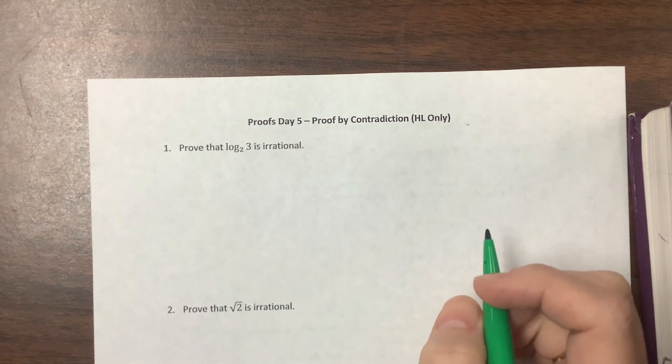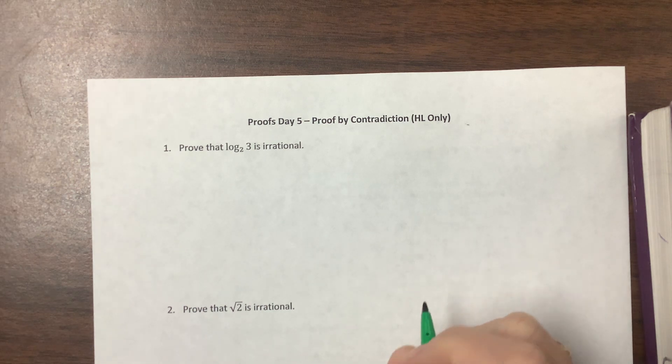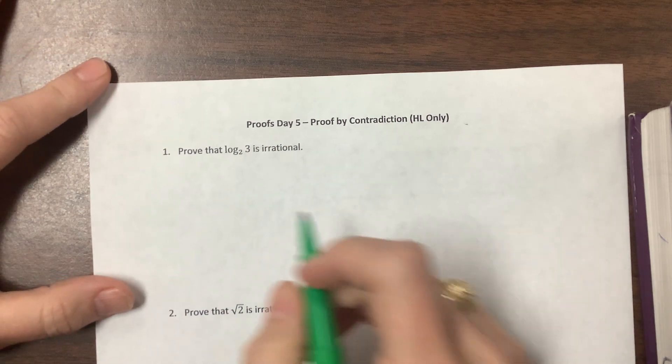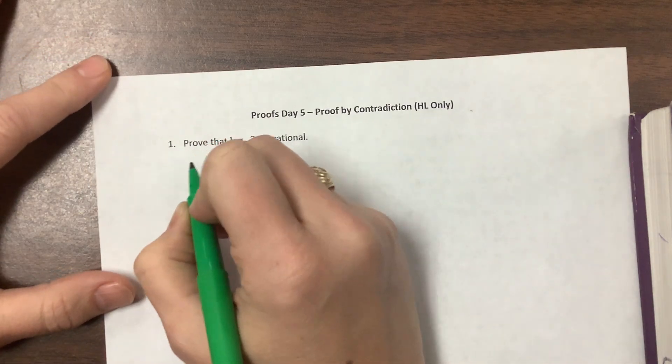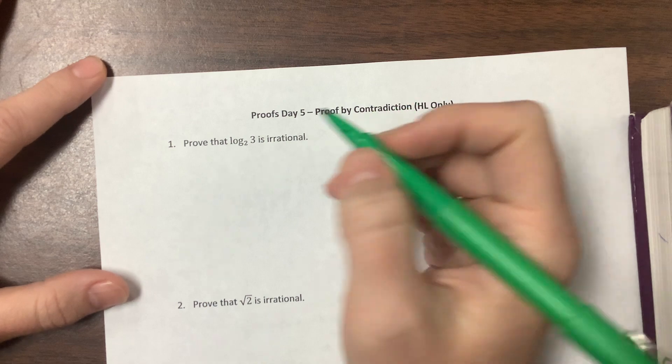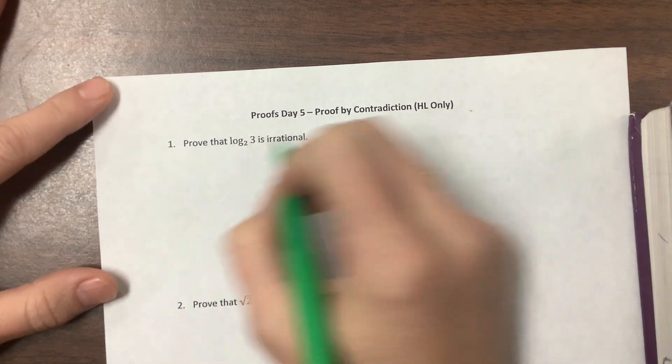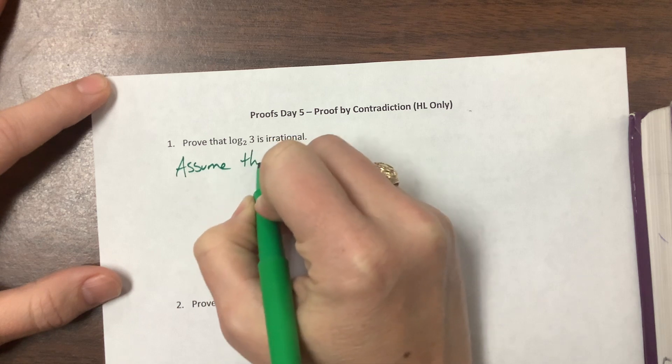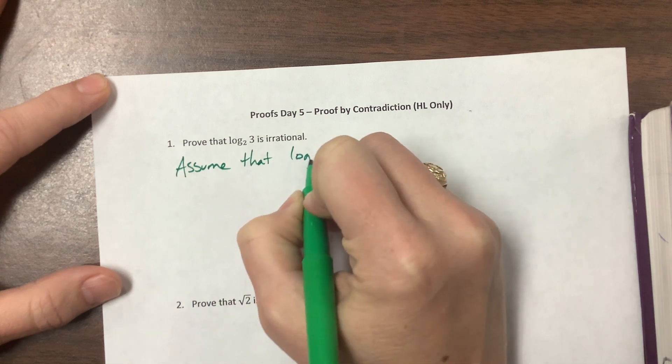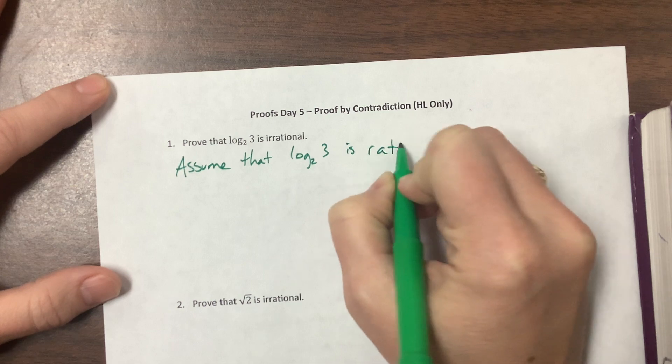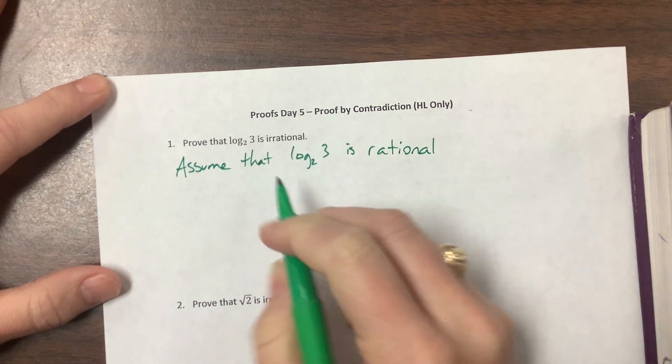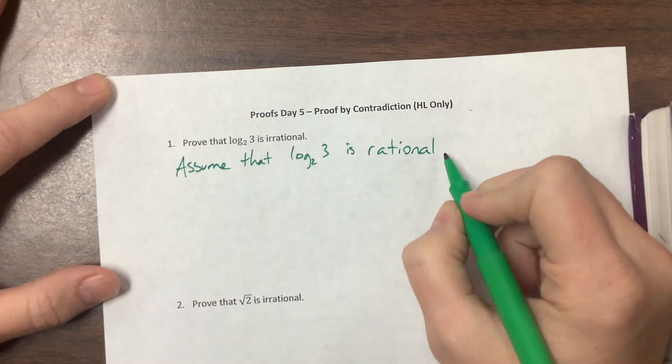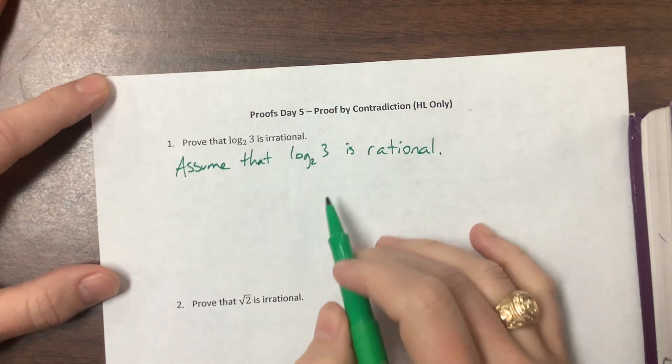So this might be something that we know to be true, but we have to prove it. So on this one, what we'll do is we'll assume that log base 2 of 3 is rational. Okay, so this is one of those where the opposite is either going to be rational or irrational. And so we're assuming the opposite, we're assuming the negation of that.